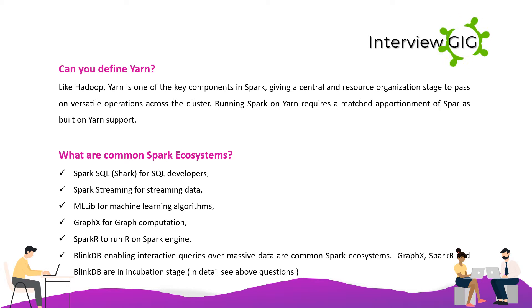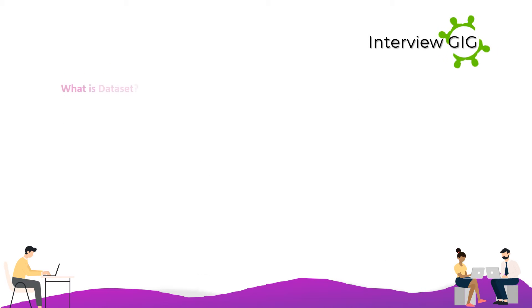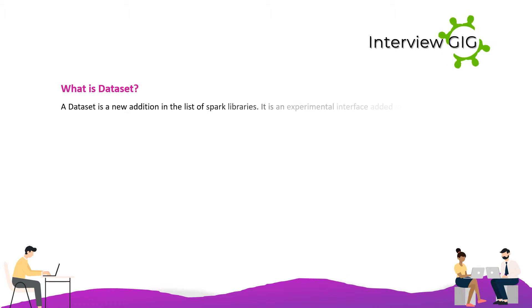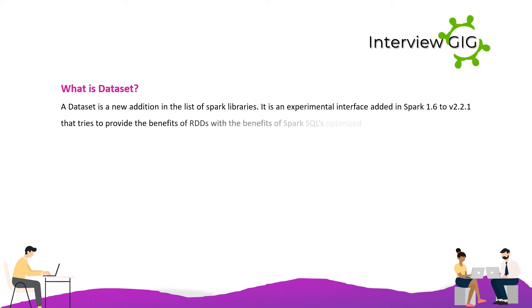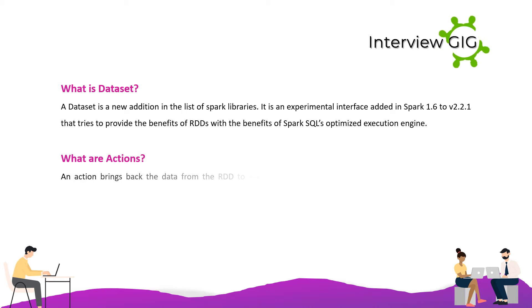What is a Dataset? A Dataset is a new addition in the list of Spark libraries. It is an experimental interface added in Spark 1.6 to v2.2.1 that tries to provide the benefits of RDDs combined with the benefits of Spark SQL's optimized execution engine.